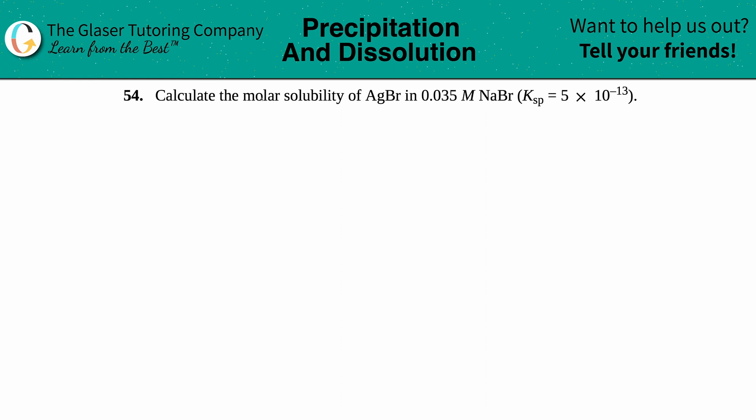Number 54: Calculate the molar solubility of AgBr in a 0.035 molarity solution of NaBr. They gave us a Ksp of 5 times 10 to the negative 13th. Okay, so I have a Ksp value here, so I need to know which one is this Ksp for - is it for the AgBr or is it for the NaBr?